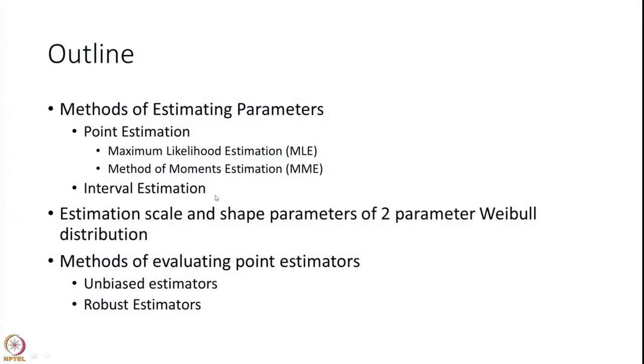We will have estimation of scale and shape parameters of the two-parameter Weibull distribution. We are going to give examples of Bernoulli as well as normal, but they are very straightforward. So we would like to give an example of the two-parameter Weibull distribution, which is a bit more involved. We will also talk about methods of evaluating point estimators — that is, unbiased estimator and robust estimator — which we will cover in subsequent sessions.